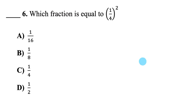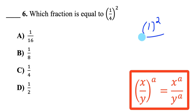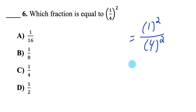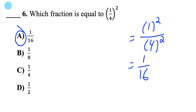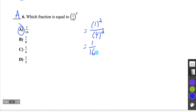Question 6: I have a power where the base is a fraction. The exponent applies to both the numerator and the denominator. So I square the 1 and the 4, giving me 1 over 16. That's answer A. We're done the first page of the exam, and almost all of these are easily verifiable with your calculator.